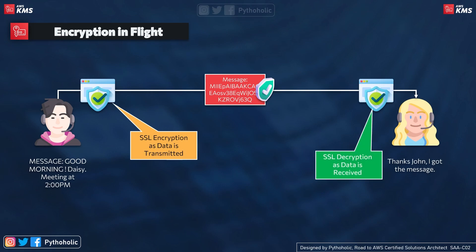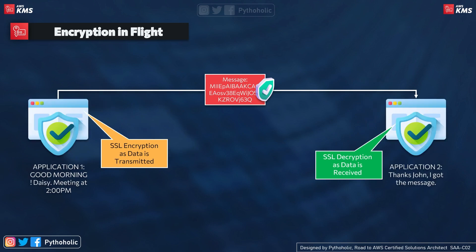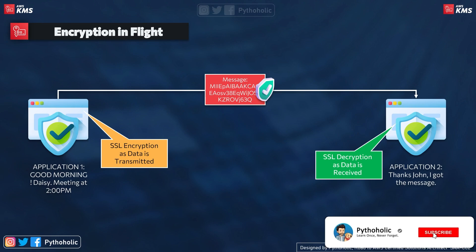When we send our data or message to someone else over another application, the data is protected using a secure communication channel which in theory cannot be breached between the starting point and the destination. Here we are using SSL encryption — the data is transmitted and decrypted using the same, making the channel secure to communicate, and that is why it is called encryption in flight.